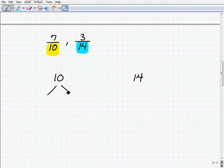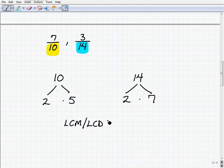Alright, so 10 prime factors as 2 times 5 and 14 prime factors as 2 times 7. So our LCM or LCD in this case, because we're talking about the denominators, same thing. It's going to be, we need a 2.